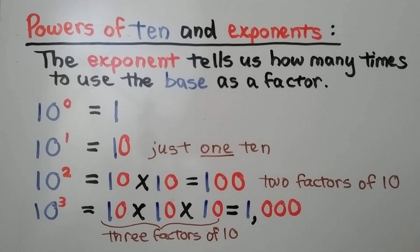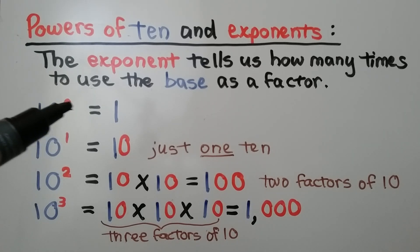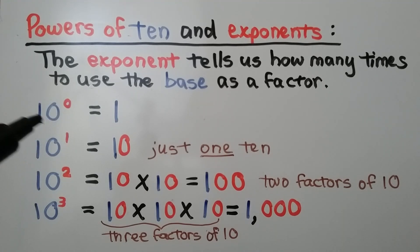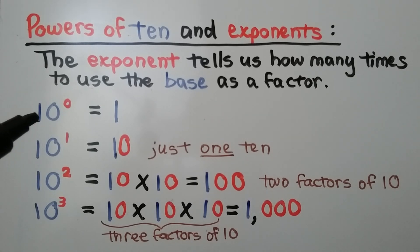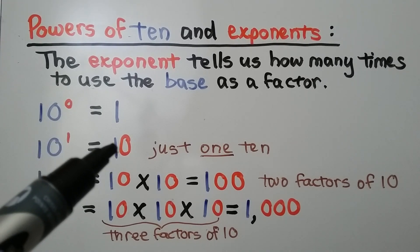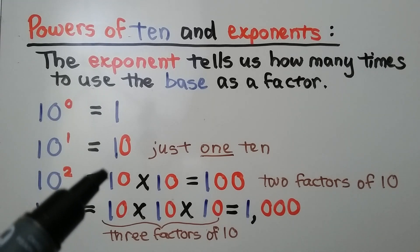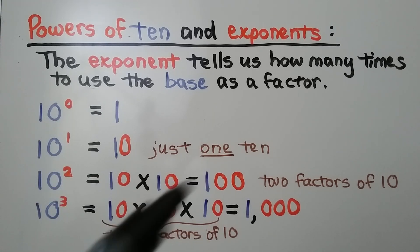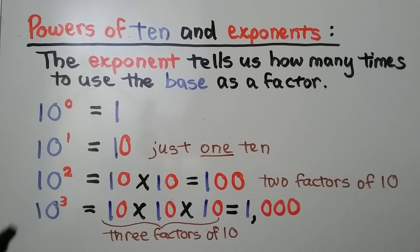Let's do a review of the powers of 10 and exponents. The exponent — this little red number up here — tells us how many times to use the base, that would be the number 10, as a factor. If we have 10 to the zero power, we don't have 10 as a factor at all, so we just have 1. 10 to the first power, we have 1 ten. 10 to the second power, we have two factors of 10, which equals 100. And 10 to the third power means we have three factors of 10, which equals 1,000.